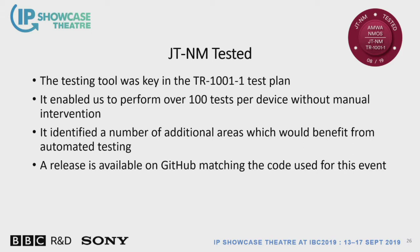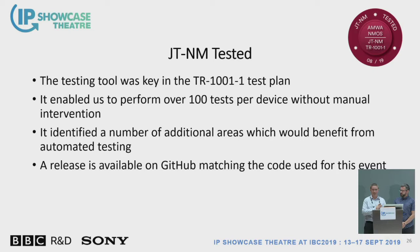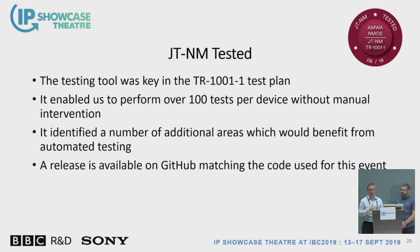JT-NM Tested — you'll see more information about it around the room. This is the second time JT-NM has run a tested event; the first was just before NAB this year. The important difference at this event is that it included testing of JT-NM Technical Recommendation 1001, which encompasses IS-04 and IS-05 specifications. A key aspect was making use of this automated testing tool — we were performing around 100 tests per device without any manual intervention. As a result we've identified a few areas for improvement to the tool. A release of the testing tool matching the code used at that event is available on GitHub.